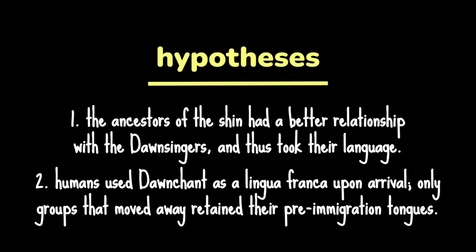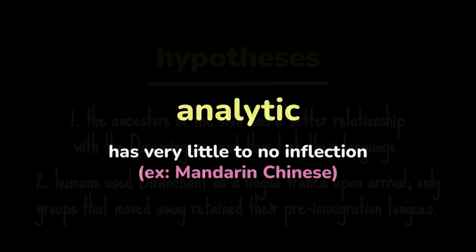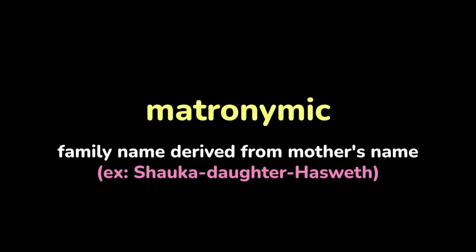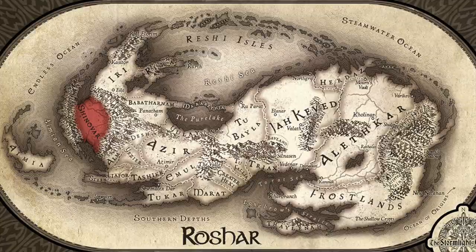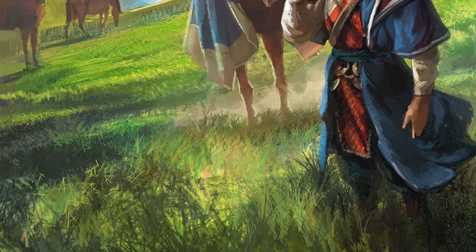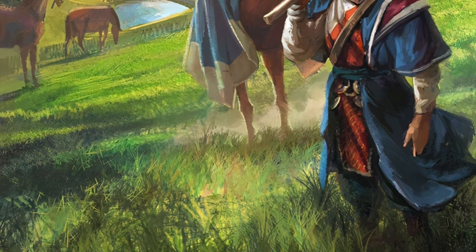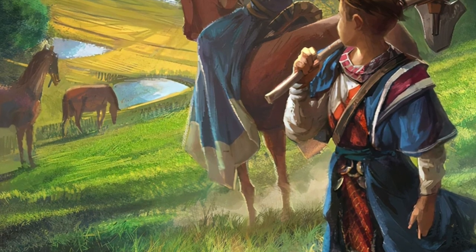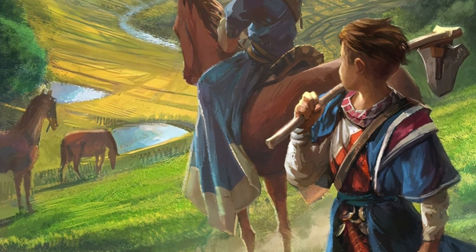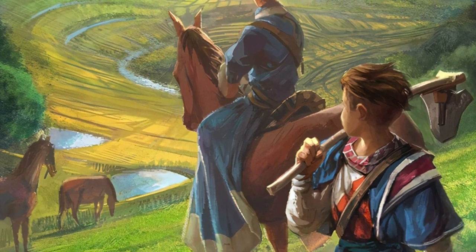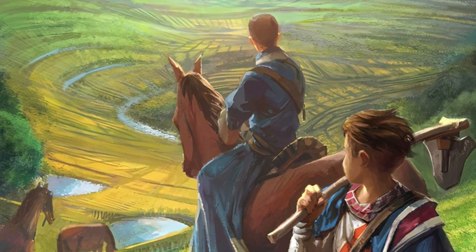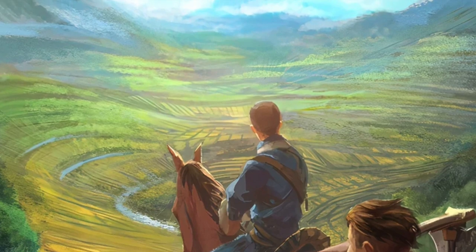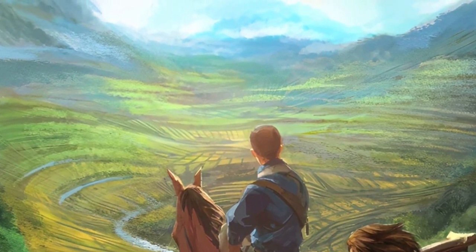We don't know much about the Shin language, other than that it is predominantly analytic, has an elaborate system of honorifics, and has a patronymic naming system for boys and a matronymic system for girls. Also, since Shinovar is bordered by the Misted Mountains, it has a very different ecological landscape than the rest of Roshar, and much of its flora and fauna are descendants of invasive species from Ashyn that the original human settlers brought with them. For example, earth-like birds, dogs, and wine are extremely rare outside of Shinovar, and so the Shin have multiple words for different types of birds, dogs, and alcoholic beverages, whereas other Rosharians just call them all, respectively, chickens, hounds, and wine. We only know one phrase in the Shin language — a greeting.